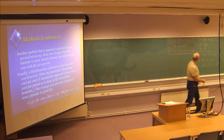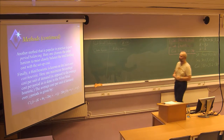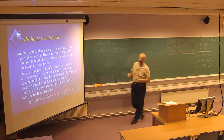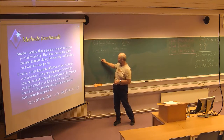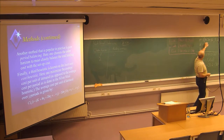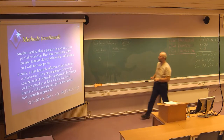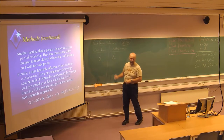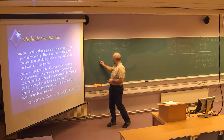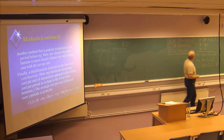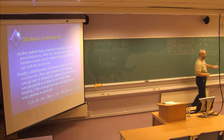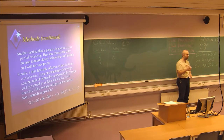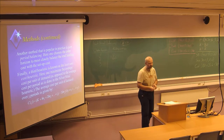Order horizon 1 means produce 18, which is exactly what we need, and that will result in no holding cost. Next alternative, order horizon 2: we are ordering 48, storing 30 in one period at a cost of 2, which means a total holding cost of 60. Then order horizon 3: we are producing 90 items, storing 30 in one period and 42 in two periods. 42 × 2 × 2 plus 30 × 2 gives us a total of 228.